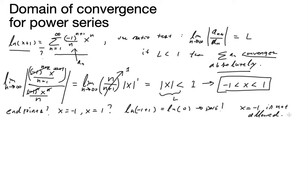Let's verify that by plugging x equals negative 1 into the series. We get the sum of negative 1 to the n plus 1 over n, times negative 1 to the n, starting at n equals 1 going up to infinity. We need to do a little work to figure out what this simplifies to.